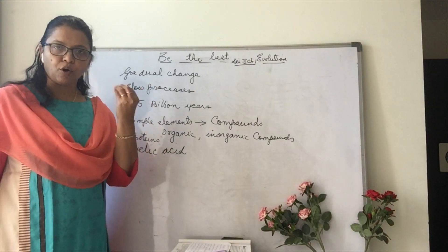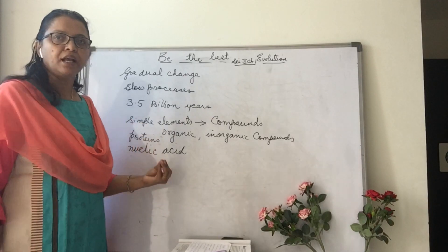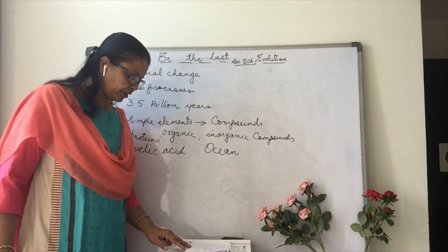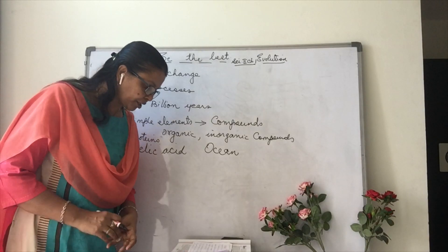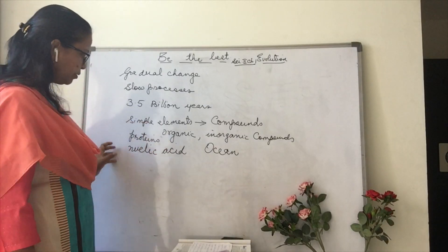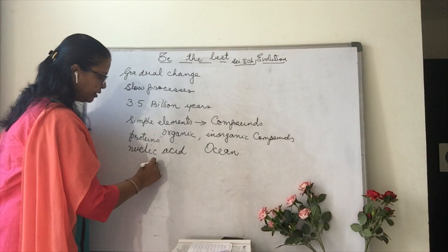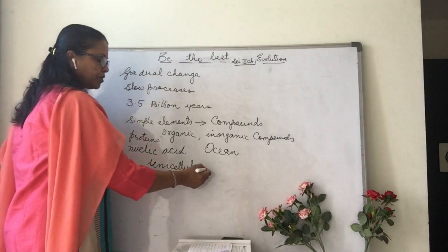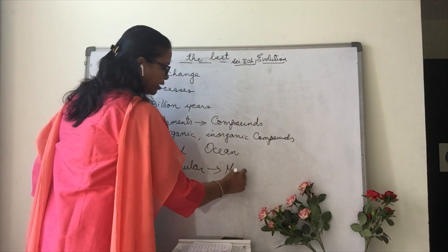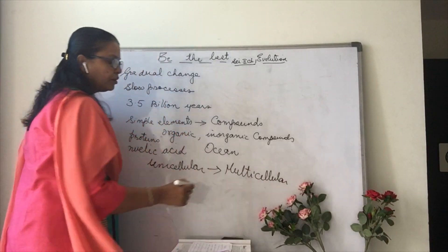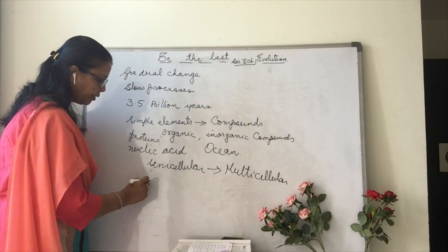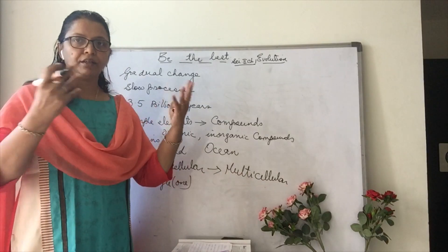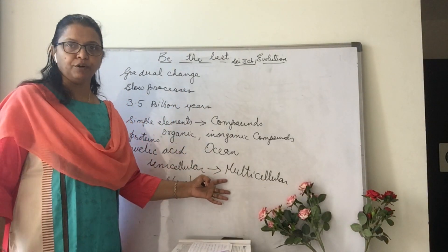The unicellular organisms, or the first primitive type of cells, were found in the oceans and seas — in the waters. The primitive type of cell must have been a unicellular organism. These unicellular organisms then converted into multicellular organisms. Unicellular means a single cell forming an organism, while multicellular means organisms with many cells.